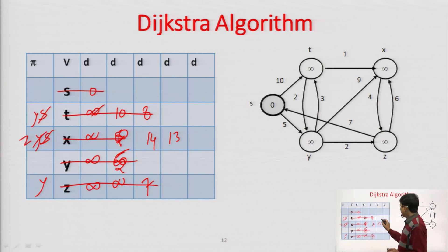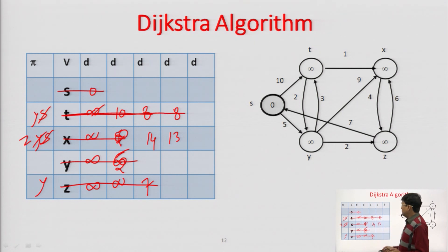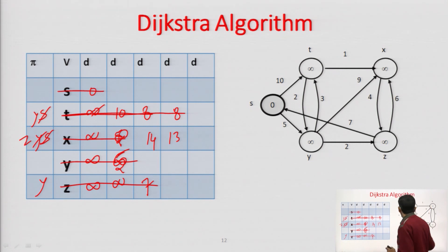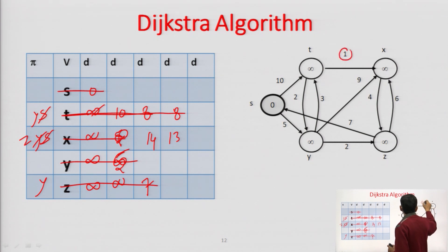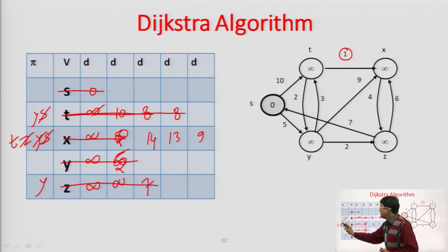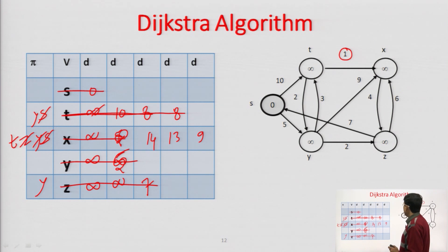Now we delete T (cost 8). From T, there are edges to Y and X, but Y is already deleted so we don't consider it. The cost from T toward X is 1, so reaching T costs 8, plus 1 = 9. We update X to 9 and set its predecessor to T.